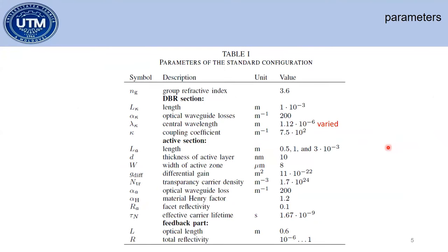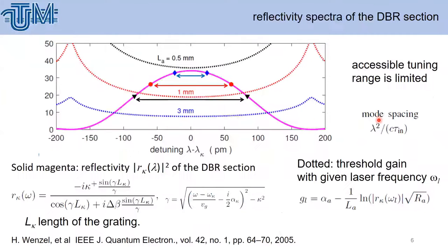Here I include the parameters — they will appear in the paper. You can see the reflectivity spectra of the DBR section. For different DBR lengths — 0.5 mm, 1 mm, and 3 mm — we have an accessible tuning range limited by the reflectivity spectrum. The solid line is the reflectivity of the DBR section, which has the following formula.